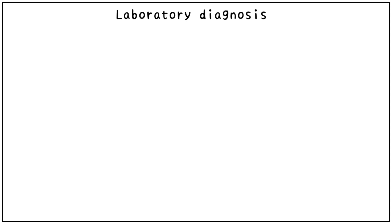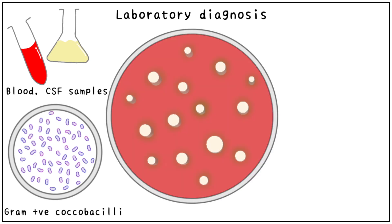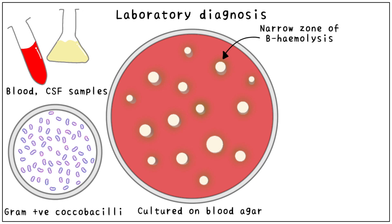For the laboratory diagnosis, CSF and blood samples can be used. On gram staining, purple coccobacilli are easily visualized. Listeria is cultured on blood agar, where a narrow zone of beta hemolysis is seen around the colonies. This is due to the production of Listeriolysin O.